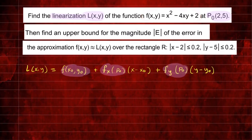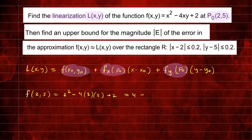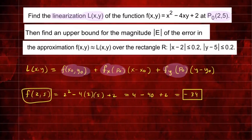Using this function, let's find its partial derivatives. First, we're going to evaluate f at the point (2, 5). Plugging in the x and y coordinates, we have 2² - 4xy, so that's 4 - 4 times 2 times 5, plus 2. This gives us 4 - 40 + 2, which equals negative 34. So f(x₀, y₀) = -34, and that's what we'll plug in for that component.